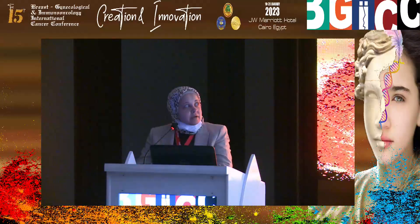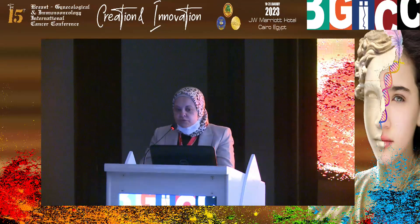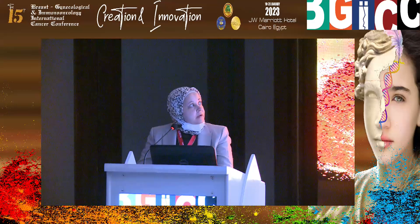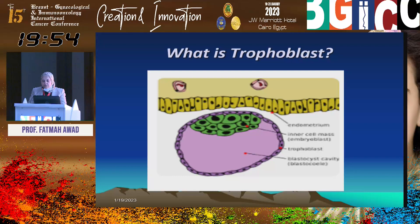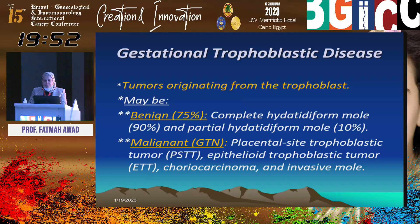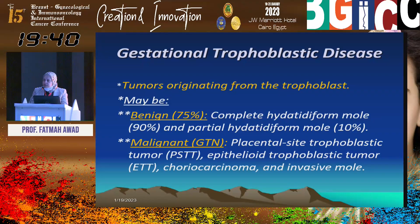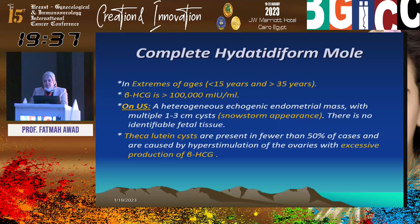Good evening everybody. Our topic now is gestational trophoblastic disease. A trophoblast are the cells that line the blastocyst and provide nutrients to the embryo, forming a large part of the placenta during pregnancy development. Gestational trophoblastic disease are tumors arising from the trophoblast. They may be benign in 75% of cases, and the malignant form is called gestational trophoblastic neoplasia, or GTN, which we will discuss in detail.